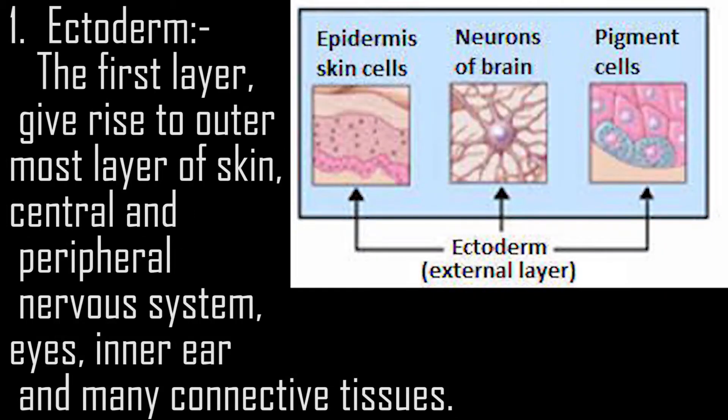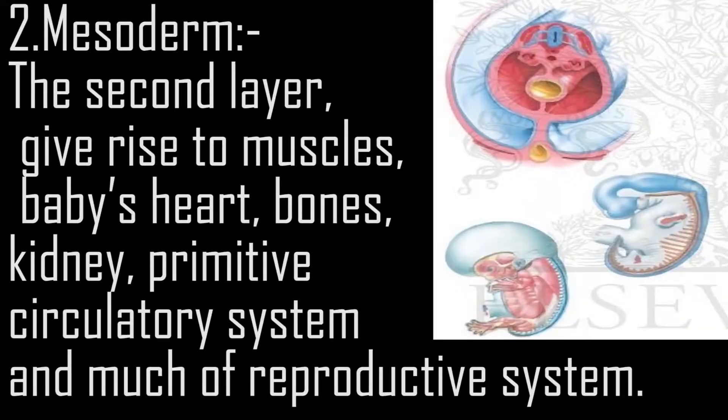1. Ectoderm — the first layer — gives rise to the outermost layer of skin, the central and peripheral nervous system, eyes, inner ear, and many connective tissues.